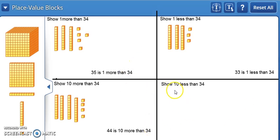To show 10 less than 34, we build our number: 10, 20, 30, 31, 32, 33, 34. To show 10 less, we take away 10.